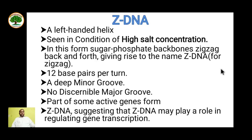Z-DNA is a left-handed helix generally seen under high salt concentration conditions. Its sugar-phosphate backbone forms a zig-zag pattern back and forth, giving rise to the name Z-DNA. It has 12 base pairs per turn, a deep minor groove, but no major groove. Z-DNA forms parts of some active genes, and it is suggested that Z-DNA may play a vital role in gene expression.